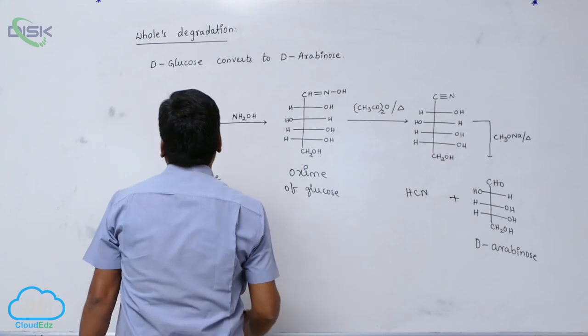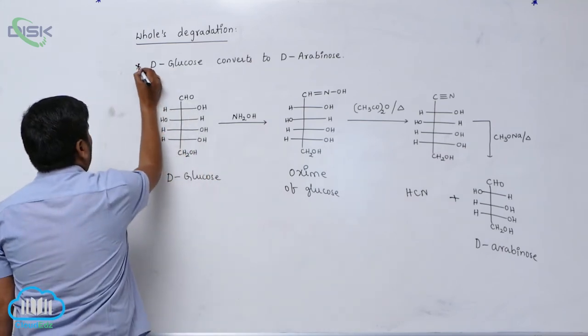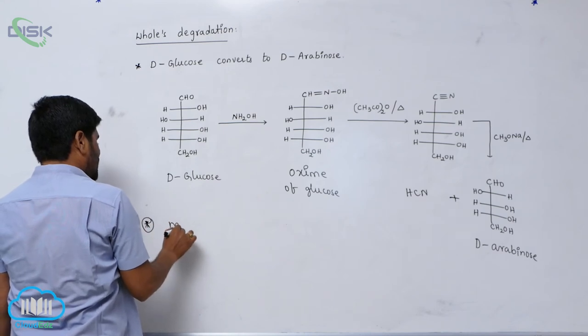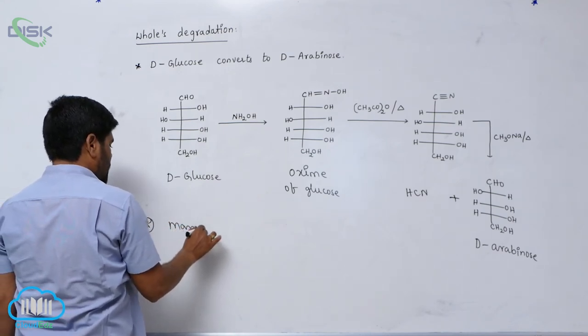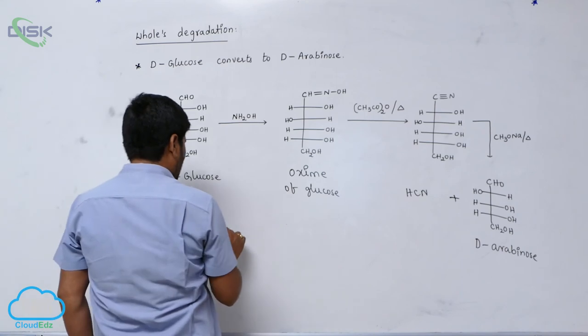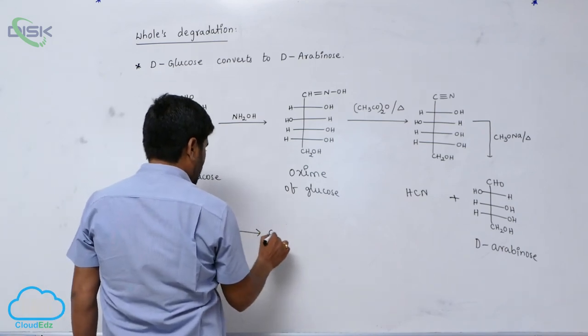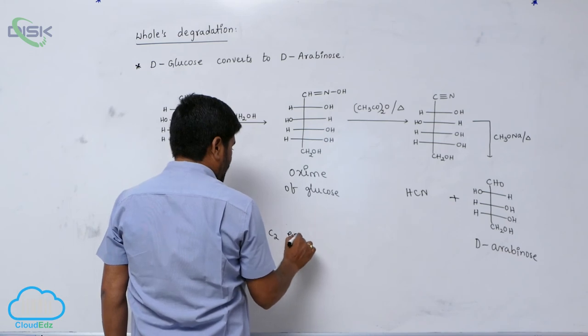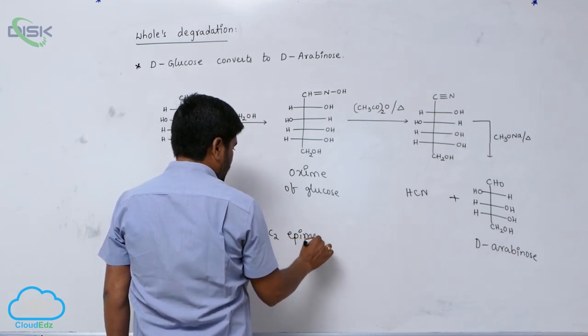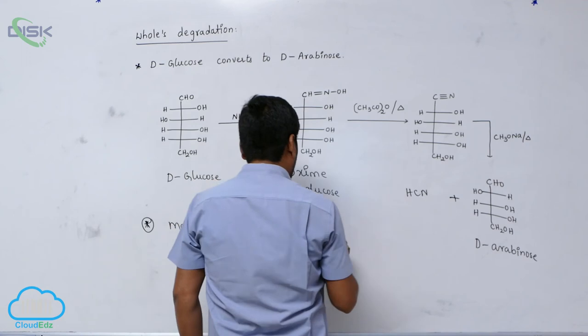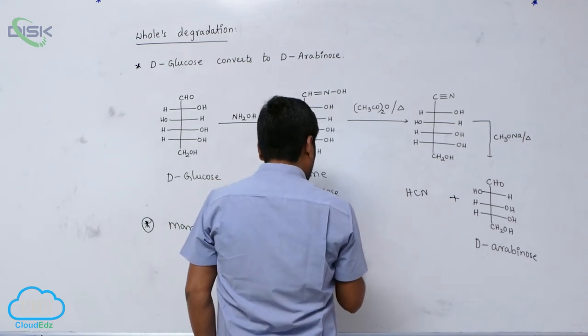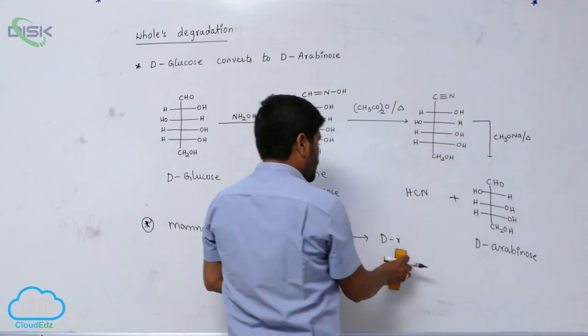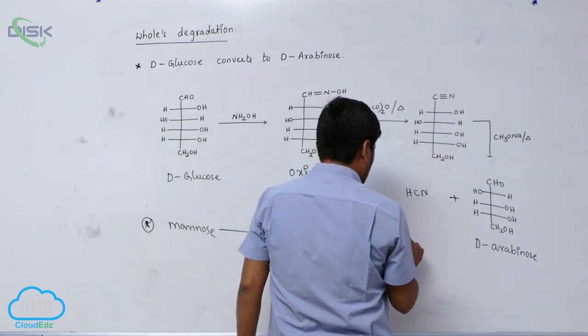Same way, mannose is a C2-epimer of glucose. It also gives which one? D-arabinose.